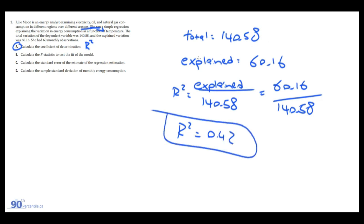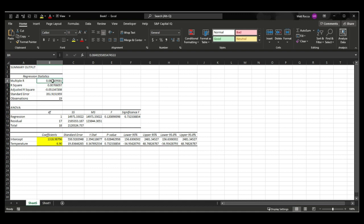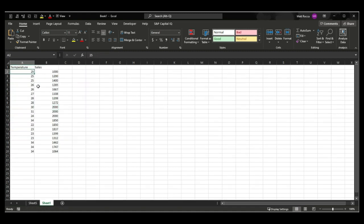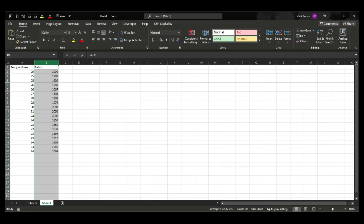So 42% of the variation in energy consumption can be explained by temperature. Generally a higher R-squared is indicative of a better regression model with more explanatory power. 0.42 is kind of on the border — some variation is explained, some isn't. An R-squared of 1 is a perfect model, while an R-squared of 0 explains nothing. In the ice cream example I made with random values, the R-squared is 0.0007 — almost no explanatory power.